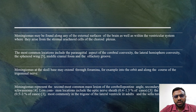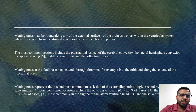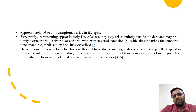Meningiomas represent the second most common mass lesion of the cerebellopontine angle, secondary to acoustic schwannoma. Less common locations include the optic nerve sheath (0.4-1.3% of cases), the choroid plexus (0.5-3% of cases), most commonly in the trigone of the lateral ventricle in adults. Approximately 10% of meningiomas arise in the spine. They may arise entirely outside the dura, and may be purely extracalvarial, with sites including the temporal bone, mandible, mediastinum, and lung.